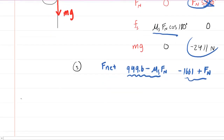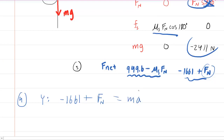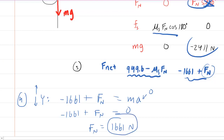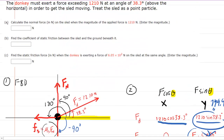The fourth step is to set the net forces equal to Ma. Starting with the y direction, since it contains Fn — which is what we're solving for in part A — we write: negative 1,661 plus Fn equals Ma. The sled is not accelerating in the y direction, so acceleration is zero. This simplifies to Fn equals 1,661 newtons, which is the correct answer to part A.